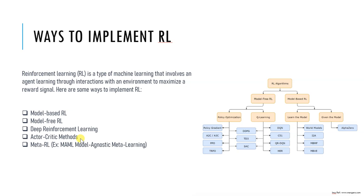The last one is Meta-RL. Meta-RL is an approach that focuses on learning how to learn, where the RL algorithm has a set of meta-policies that can be used to quickly adapt to new tasks. This is a type of RL that learns across different tasks or environments, adapting based on previous experience or context.